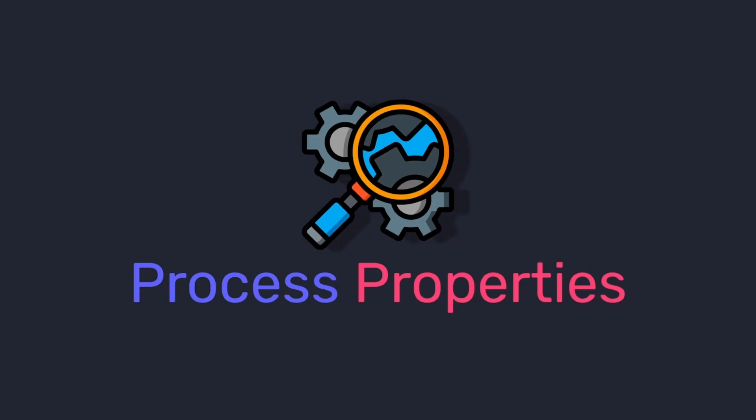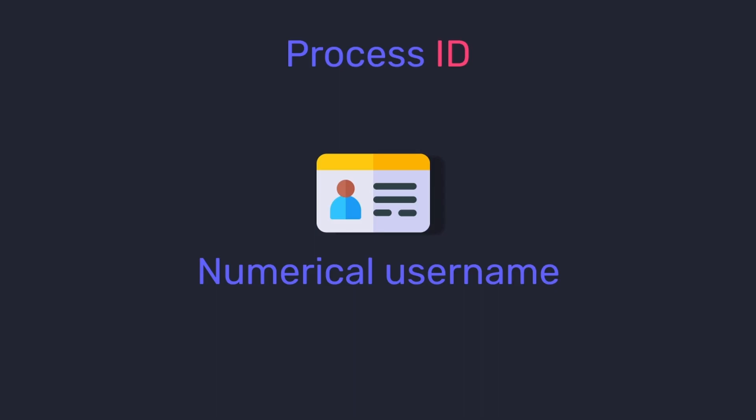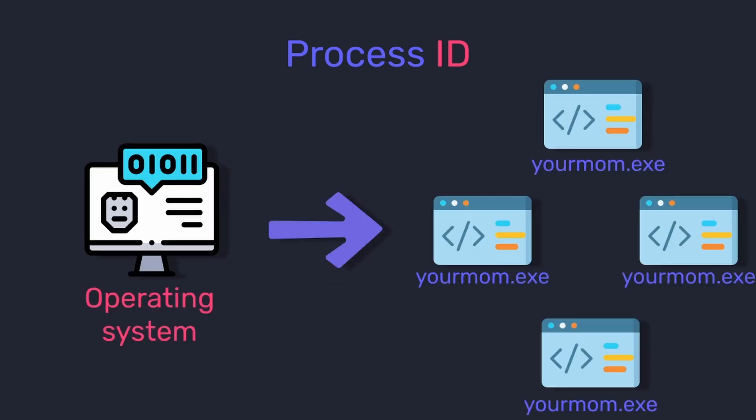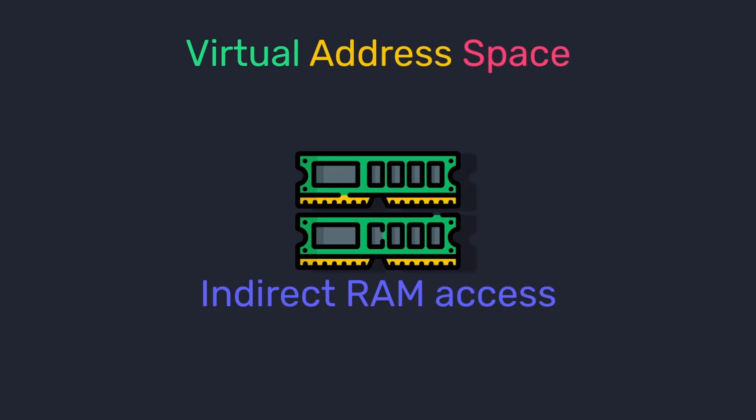Just as a factory can have multiple workers working on different tasks at the same time, a process can also have multiple threads executing different pieces of code at the same time — this is called multi-threading. Now let's look into the properties of a process and the resources which a process actually provides to the threads. The first thing every process has is a unique identifier called a process ID — you can think of it like the numerical username of each process on the operating system.